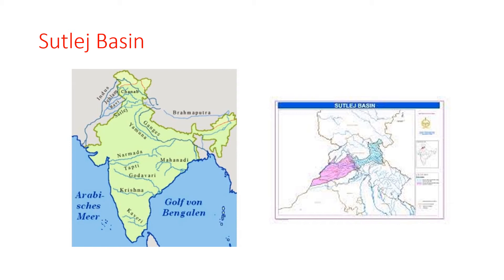These rivers have turned the plains of the northern region extremely fertile. The main crops grown in this region are wheat, sugarcane, rice, and cotton. The Bhakra Nangal Dam has been constructed on the Sutlej River. Amritsar, Jalandhar, Ludhiana, Ambala, and Chandigarh are some important cities of this basin. Punjab and Haryana lie in the Sutlej River Basin. The Bhakra Nangal Dam provides water for irrigation and also produces electricity, benefiting Punjab and Haryana.